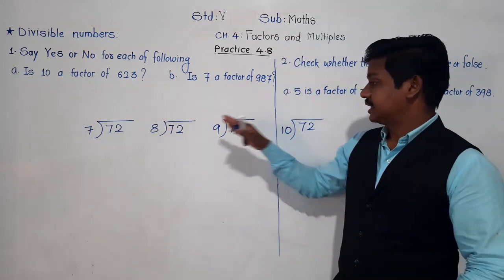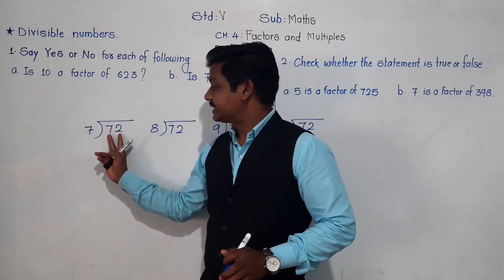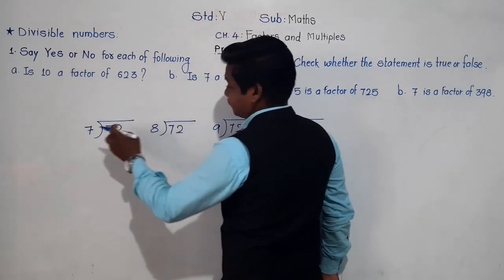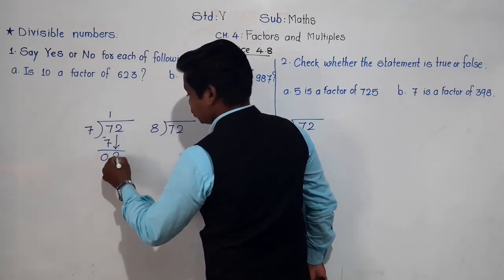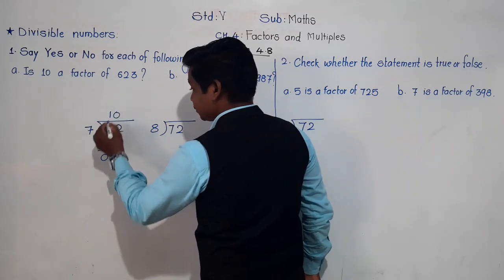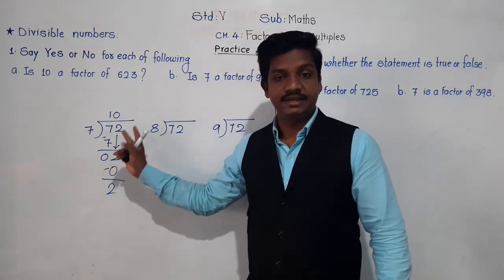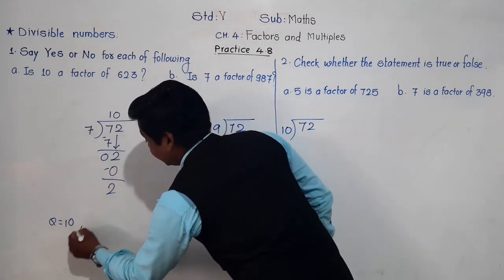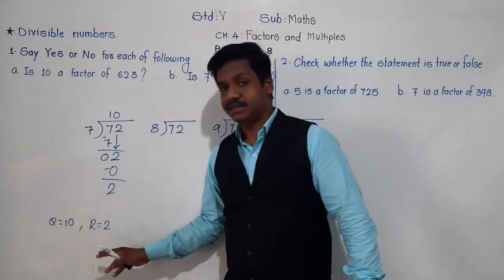Now see, why I have taken the same number — I am going to tell you later. When we divide 72 by 7, what answer and remainder will you get? 7 ones are 7, 7 and 7 is 0, bring down 2. Now 2 is smaller than 7, so we divide by 0 — 7 zeros are 0. The quotient we got is 10 and the remainder is 2.